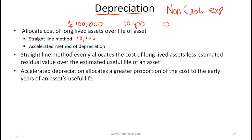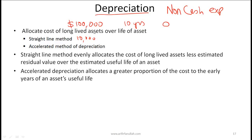With the accelerated method of depreciation, you depreciate more in the earlier years and less in the later years, but the overall depreciation over the life of the asset cannot exceed the initial value minus salvage value. Accelerated depreciation allocates a greater proportion of cost to the early years of an asset's useful life. Much more detail on this will come in the reading on long-lived assets.